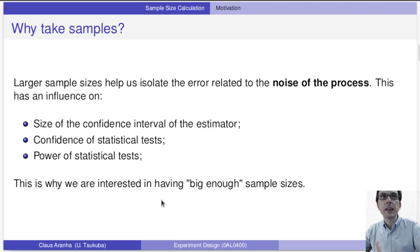So larger sample sizes help us isolate the error related to the noise of the process. This has an influence on the size of the confidence interval, the confidence statistical test, the power statistical test. That's why we want big sample sizes. So should I finish the class now and say, just get the biggest sample that you can? Well, not exactly.